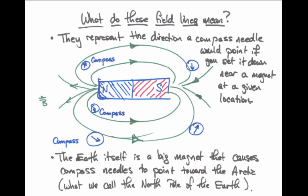The Earth itself is a big bar magnet that causes compass needles to point in different directions, always toward the Arctic Circle. What we call the North Pole of the Earth is actually its magnetic South Pole, because magnetic field lines always point away from a North Pole and toward a South Pole of a bar magnet — which means that compass needles aim toward a magnetic South Pole.